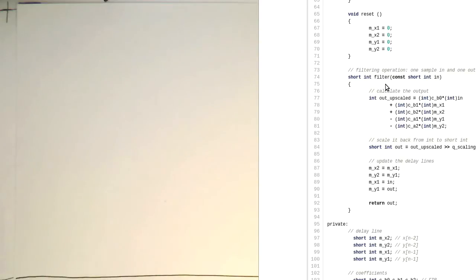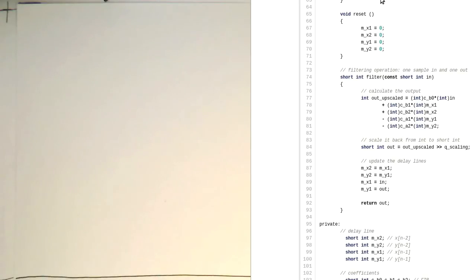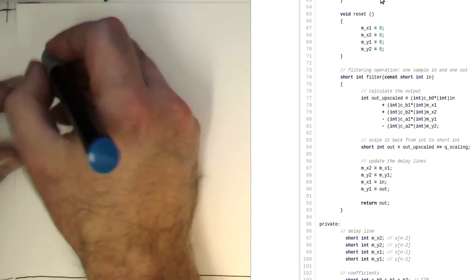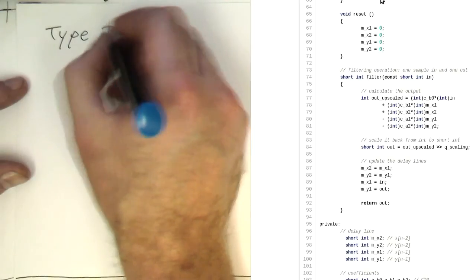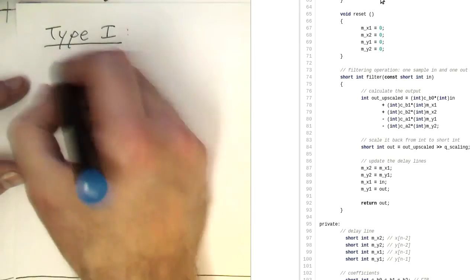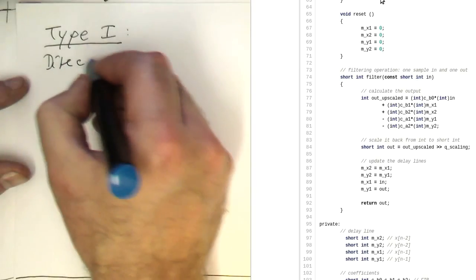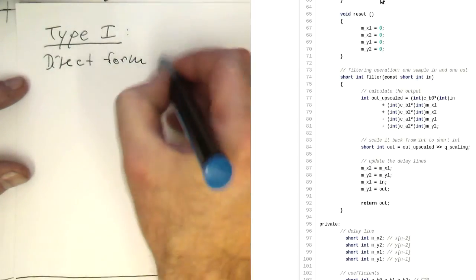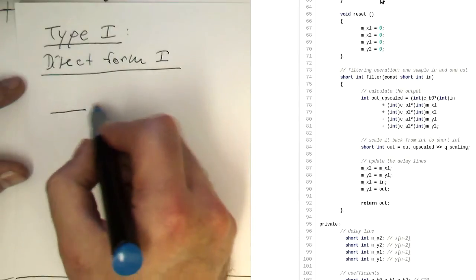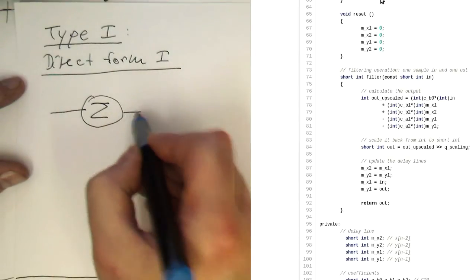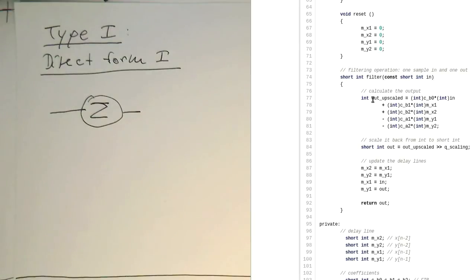This implements exactly what I've been talking about here. Just to redraw this again: Type I or direct form. Let me quickly redraw this. We have an accumulator here.